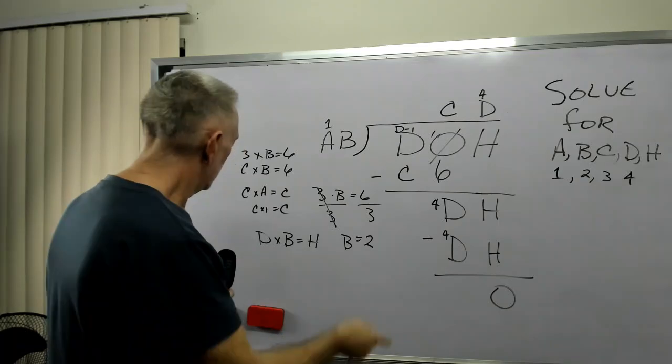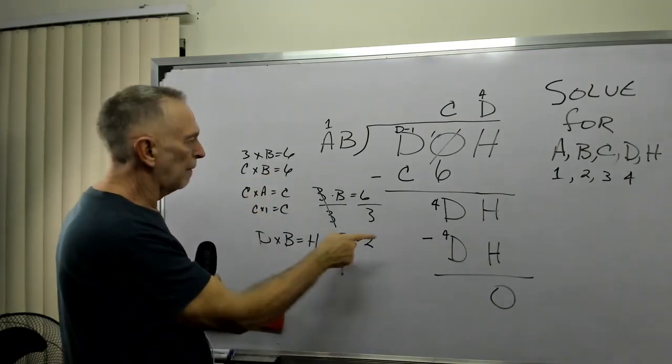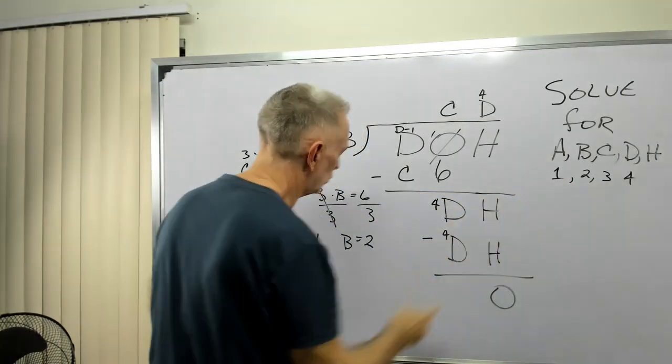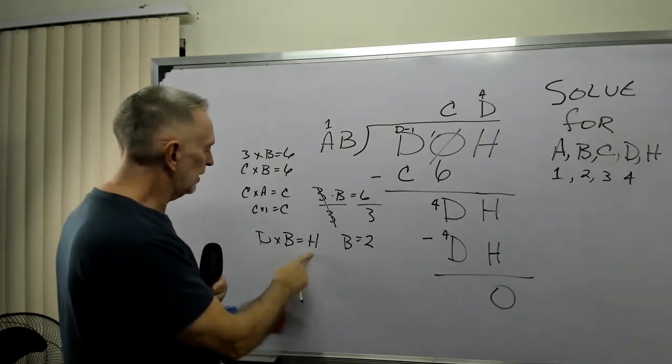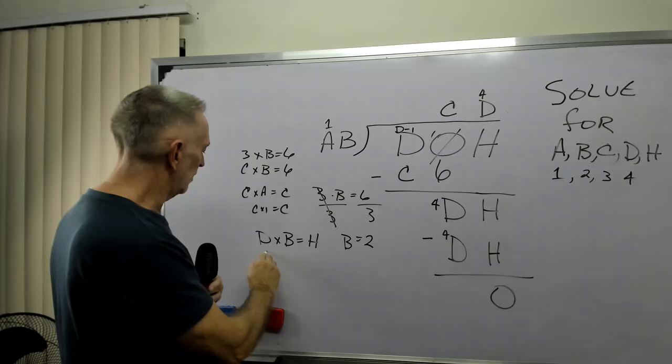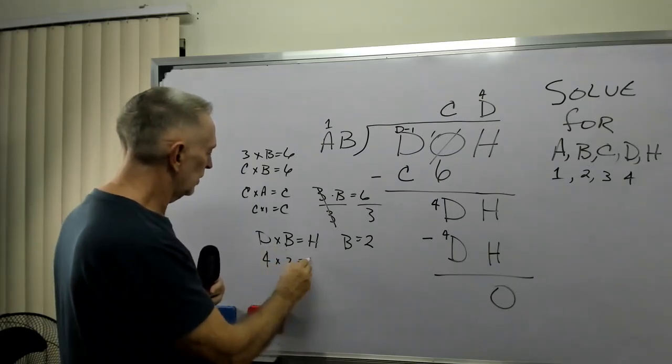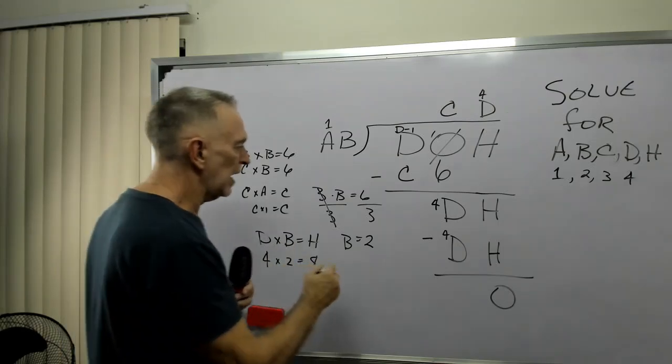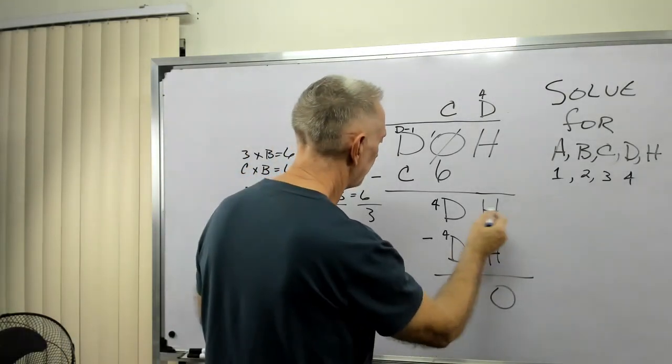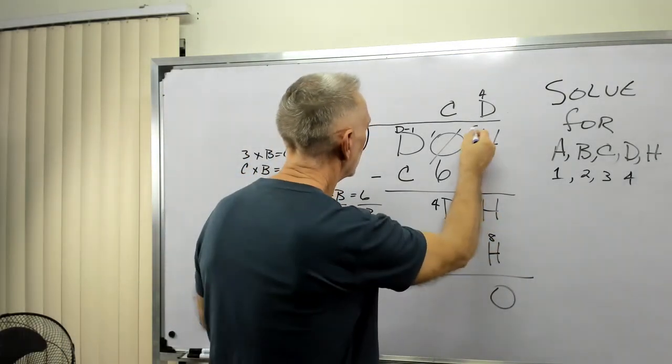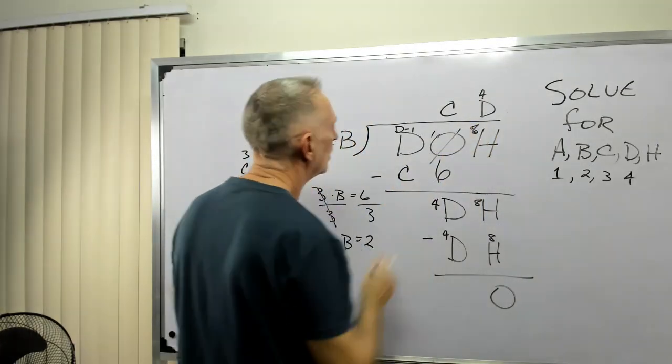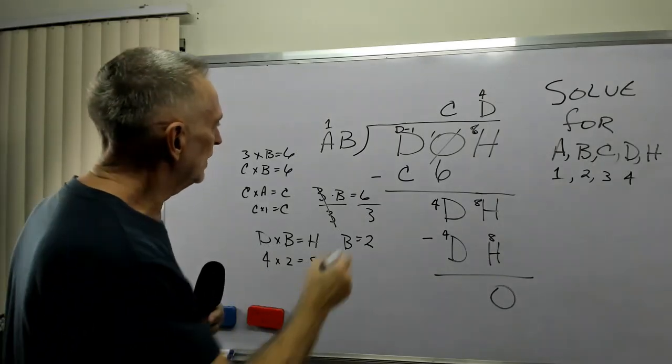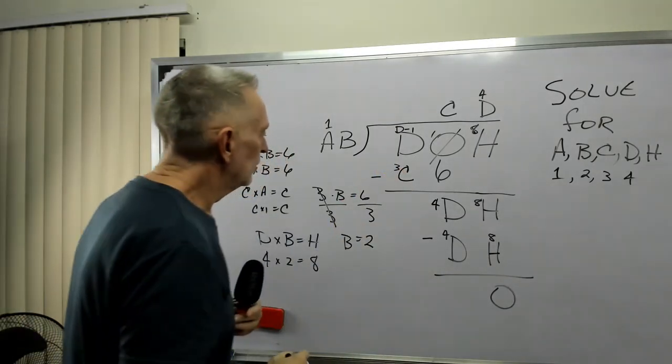Now then, since we know B is equal to 2, D times B gives me H. What was D? It was 4. 4 times B, which was 2, equals 8. So H equals 8. And C was 3.